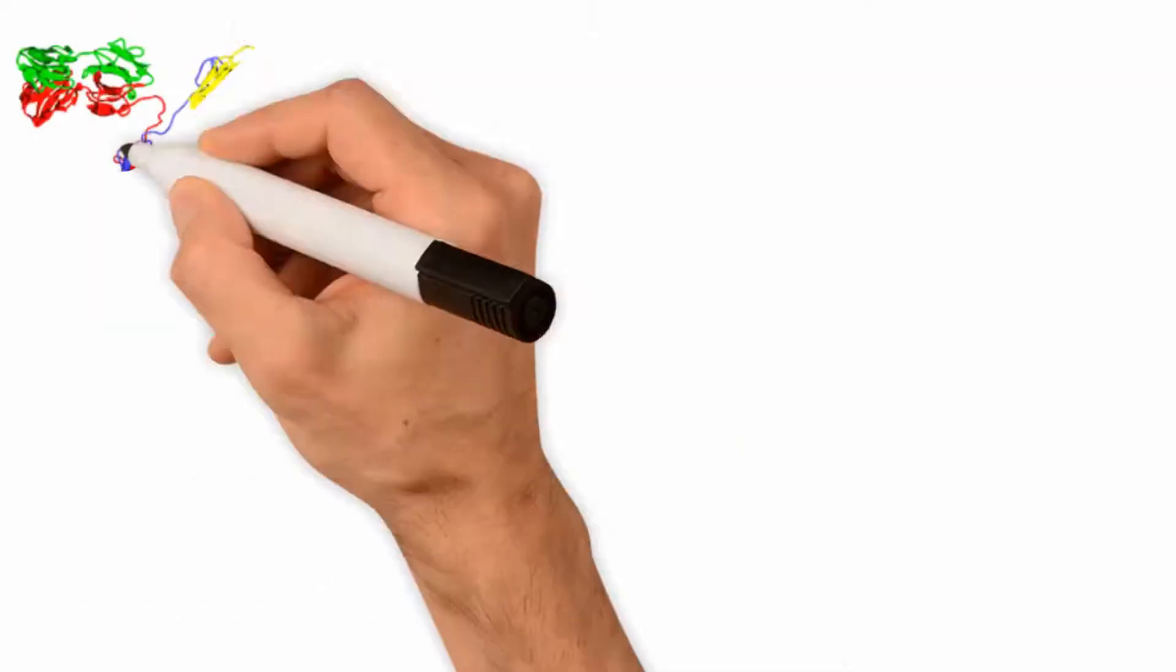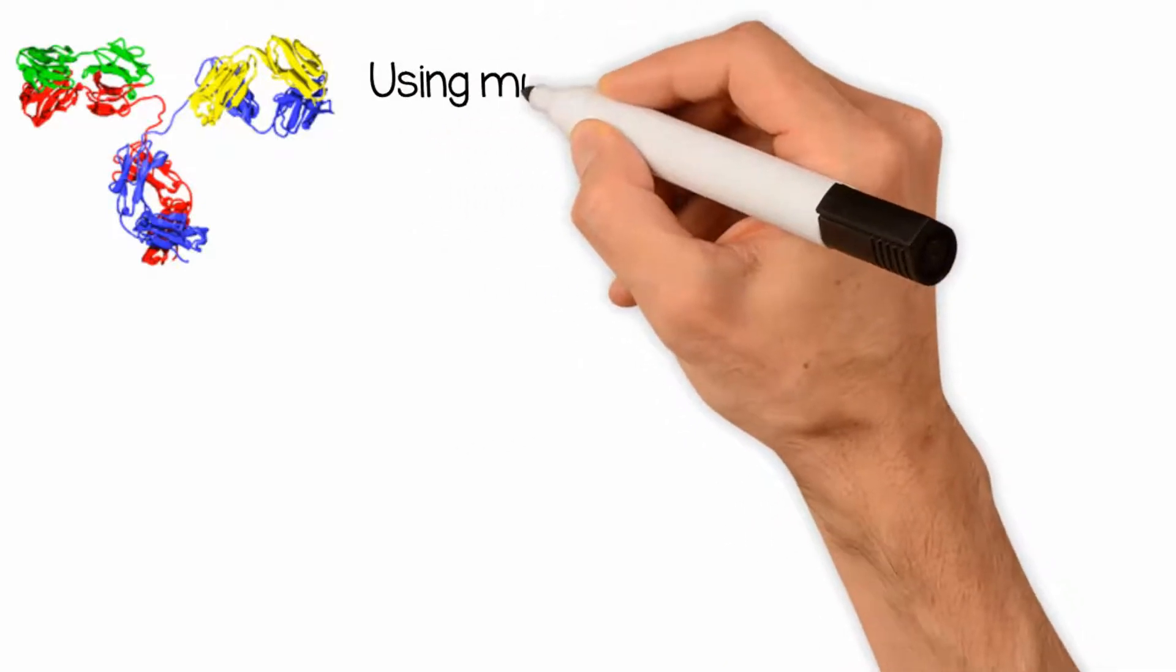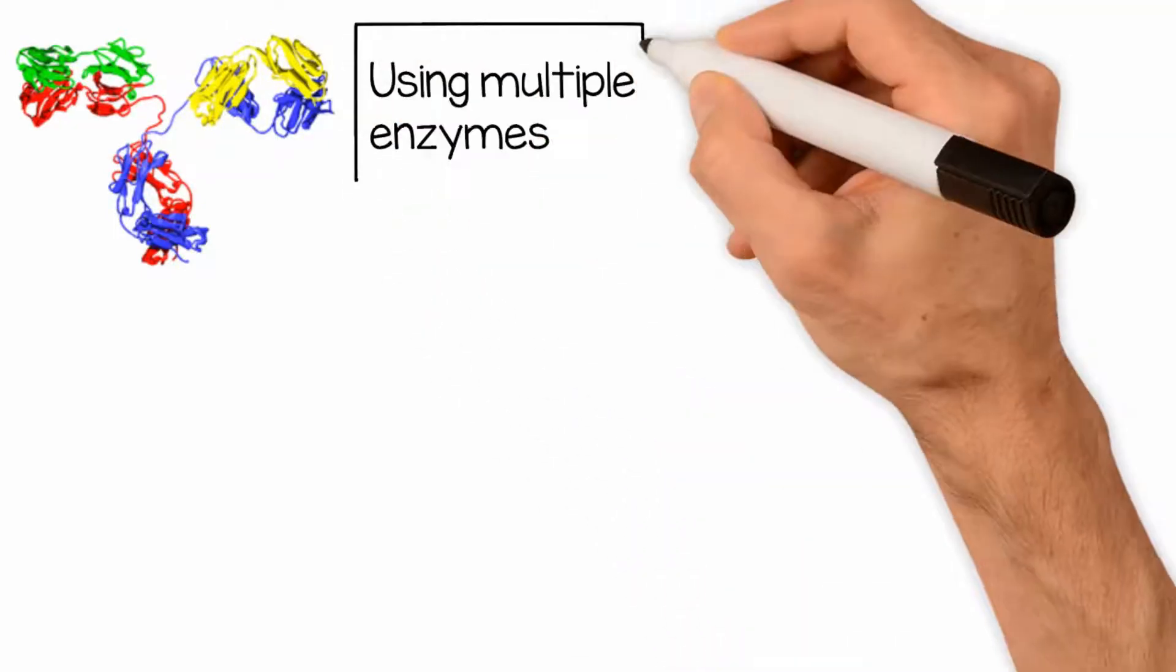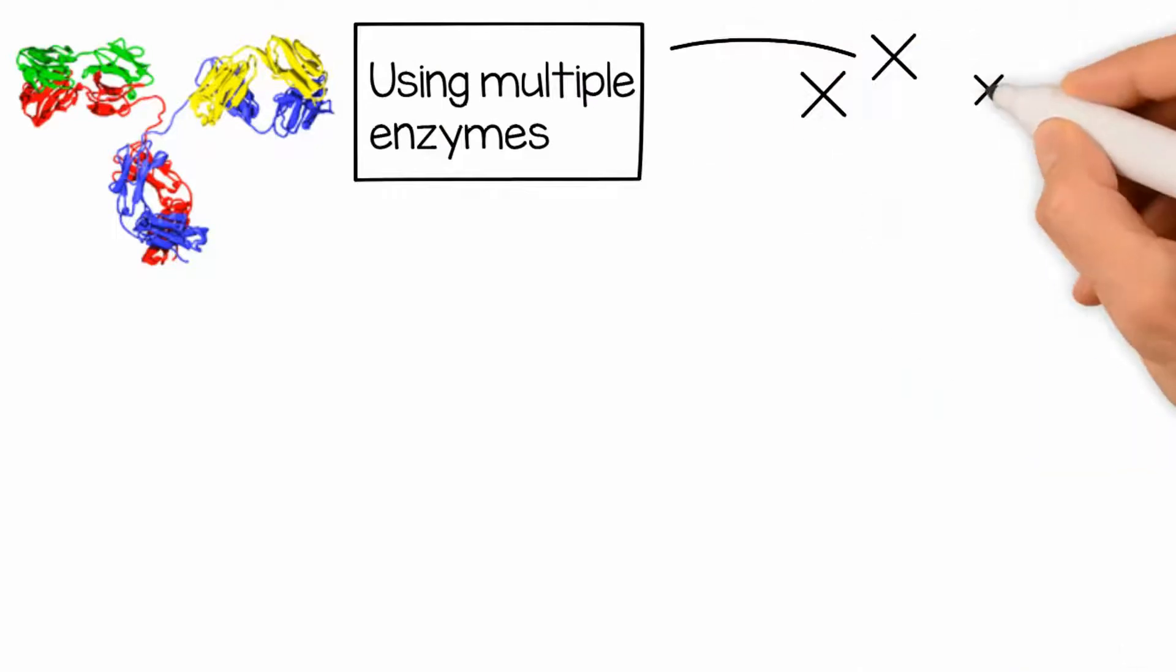First, we digest the antibody protein using multiple enzymes after carefully choosing the set of enzymes that have very different cutting rules in order to increase the digestion site diversity.